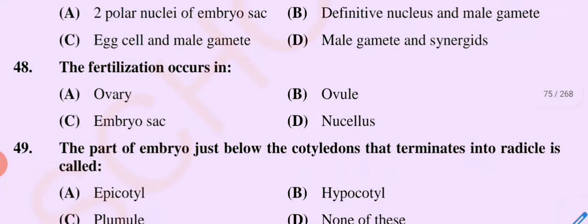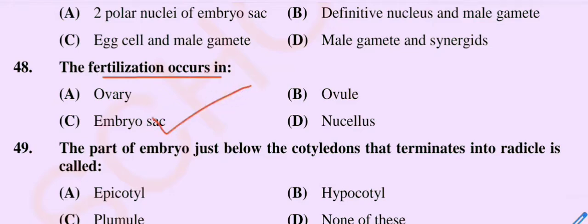Question number 48: Fertilization occurs in — option A ovary, option B ovule, option C embryo sac, and option D nucleus. The correct option is option C, embryo sac.